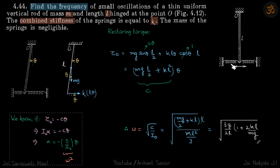We have this rod that is connected by spring at the end. Combined stiffness of the spring is k, that means if you displace this point by distance x, restoring force will be kx due to the combined effect of springs. We need to find the frequency of small oscillations about point O.